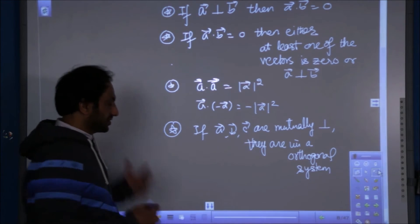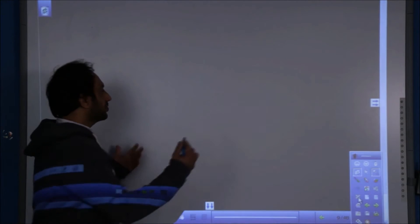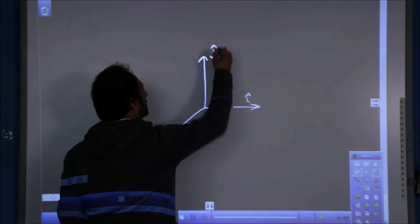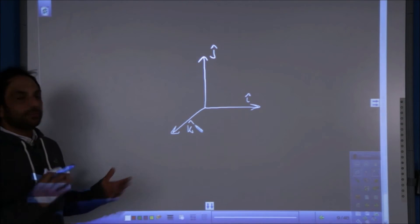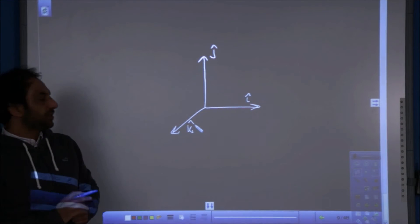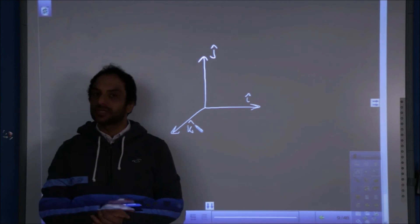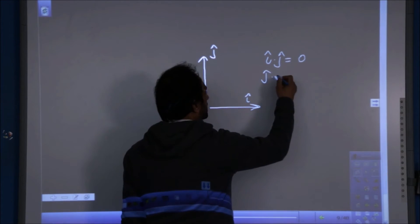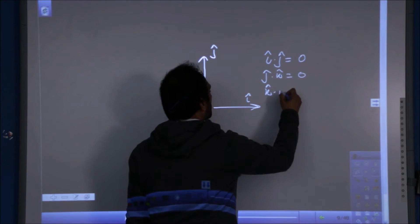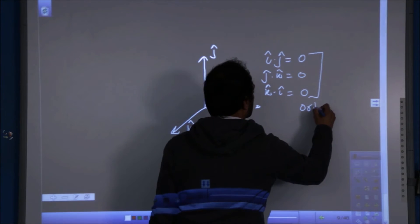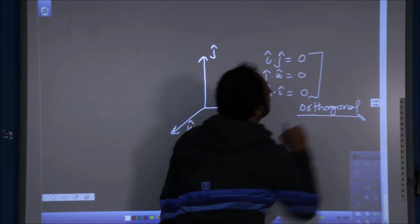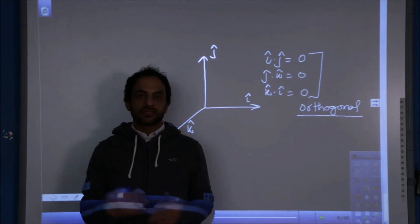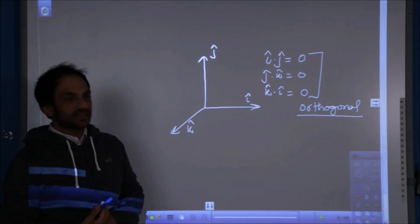The coordinate axes provide an example of such a system. The unit vectors I, J, and K are mutually perpendicular: the X-axis is perpendicular to Y, Y is perpendicular to Z, and Z is perpendicular to X. So I dot J = 0, J dot K = 0, and K dot I = 0. They form an orthogonal system.